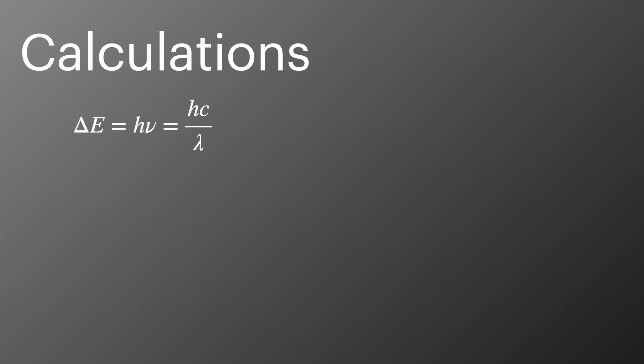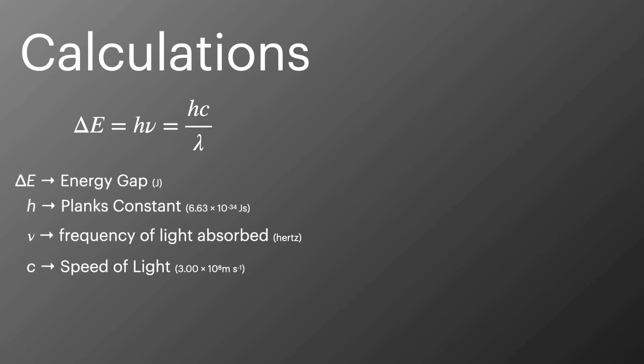The frequency and wavelength of light can be calculated using this equation, and you do have to remember it, as it's not always given in exam questions. When required, Planck's constant and the speed of light will be given. And it's also worth noting that in this equation, chemists use nu, which is the strange looking v for frequency. Those of you who study physics might be more familiar with using f as a symbol for frequency.